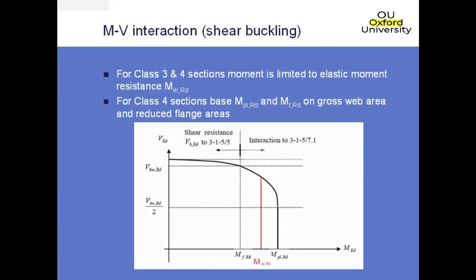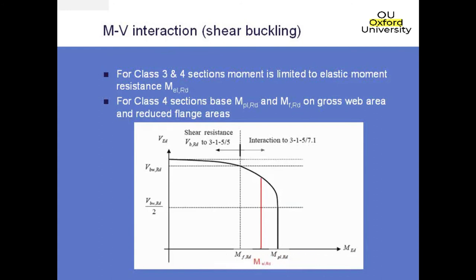That's the diagram for class 1 and 2 sections. The class 3 section is derived in exactly the same way — it's only that instead of extending the curve out to the plastic moment resistance, you just curtail it at the elastic moment resistance of the section. The same thing is done if you're using a class 4 section as well. The only difference is for a class 4 section you base the resistance for the moment on MPL,RD and MF,RD, on the gross web area and the reduced flange area within the sections.